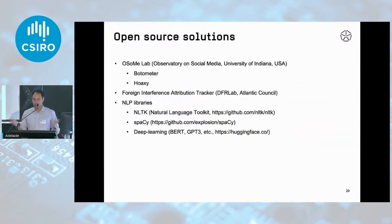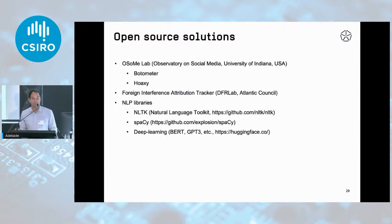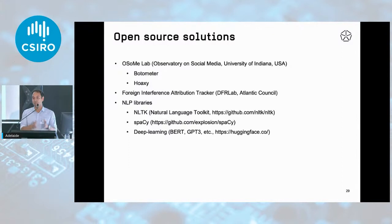There's a whole bunch of open source solutions for anyone interested in this. That first one is pronounced 'awesome' — I disagree with the pronunciation, but it's just how it is. They have lots of really good tools, and the two I've shown — Botometer and Hoaxie — are great Twitter analytic tools. The first is a bot detector, and the second is a really nice visualization for looking at information flows over Twitter, so seeing how messages propagate. Below that, I've got the DFR Lab — the Digital Forensics Research Lab — a fantastic resource. I'm highlighting the Foreign Influence Attributes Tracker widget. And below that, we have NLP libraries for the data scientists.